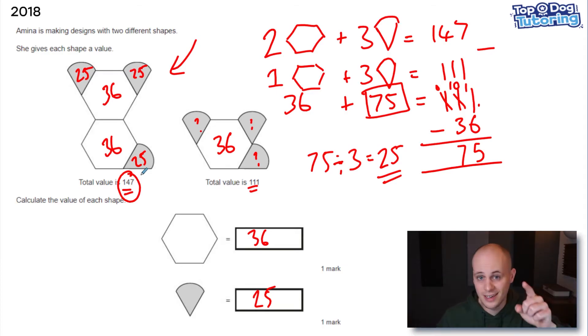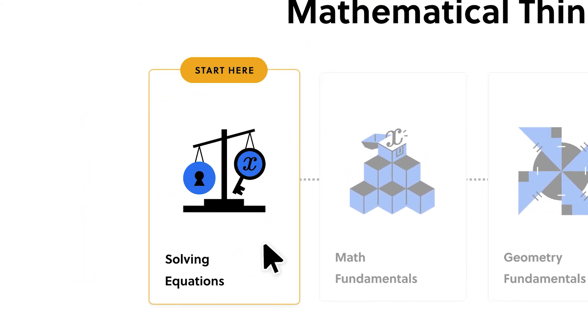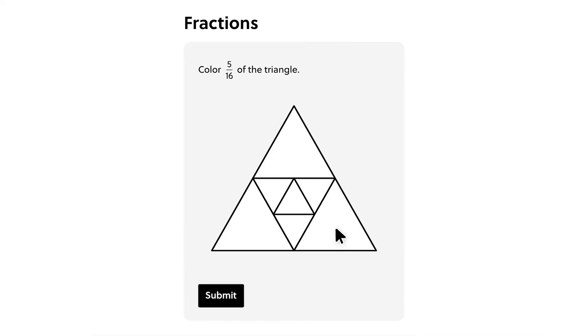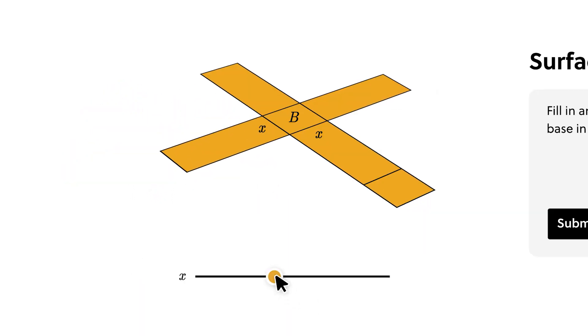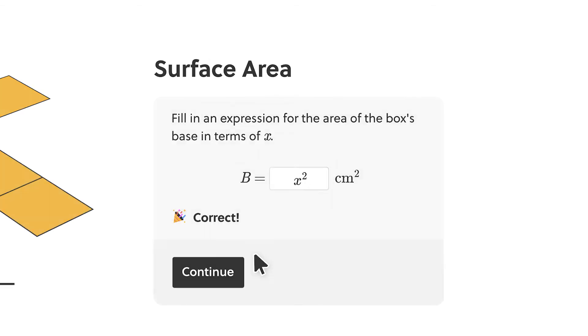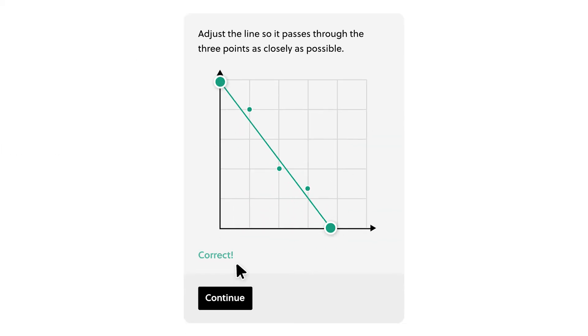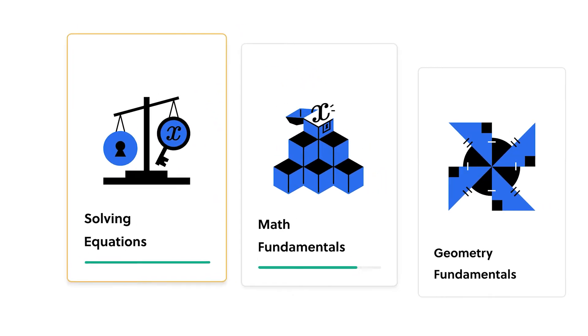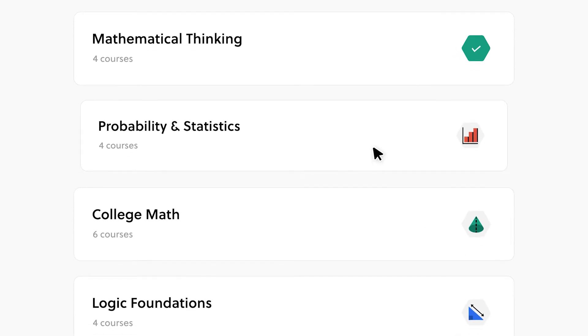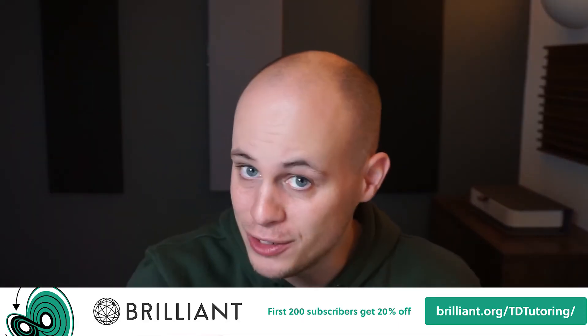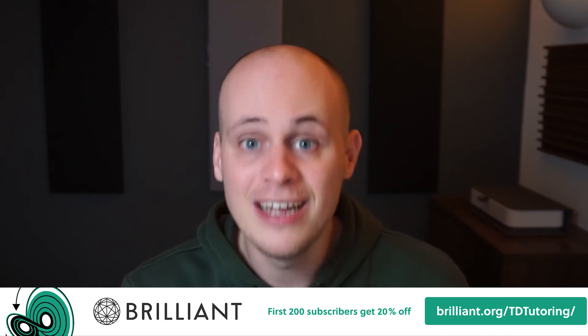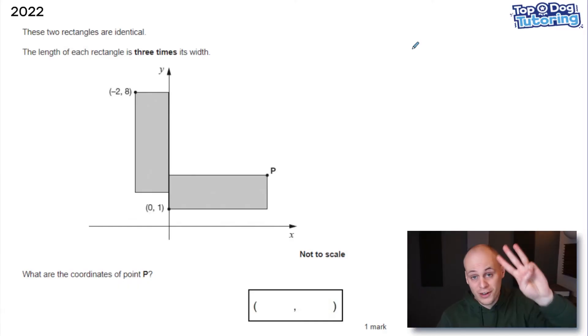Before we move on to the next one, a couple of words from our sponsor. If you like solving mathematical problems, check out brilliant.org. I've spent a lot of time on their website scrolling through interactive lessons in maths, computer science, and data science. Each lesson is interactive and visual, which I find makes learning much easier — something I always consider when teaching my own pupils. Work through fun lessons tailored to your pace. I personally recommend their number theory course. Try everything Brilliant has to offer free for 30 days at brilliant.org/tdtutoring — our first 200 subscribers get 20% off the annual premium subscription.